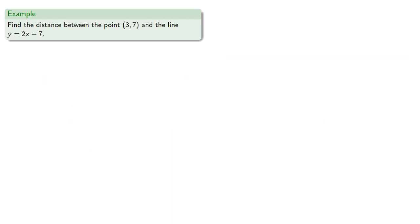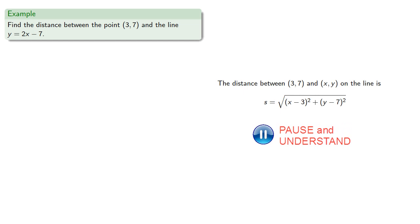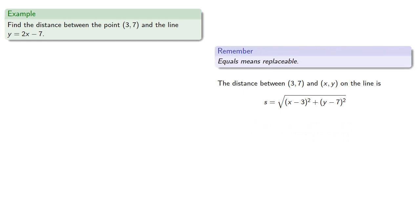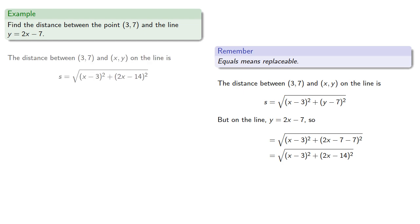So let's set it up. The distance between (3,7) and (x,y) on the line can be given by the distance formula. But remember, equals means replaceable. On the line, y equals 2x minus 7, so we can replace. And this gives us a function for the distance between a point and a line.